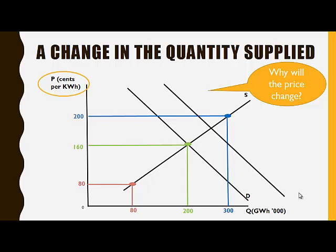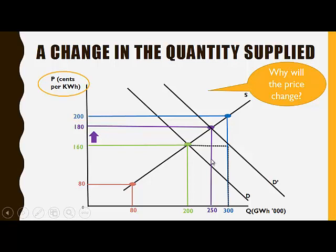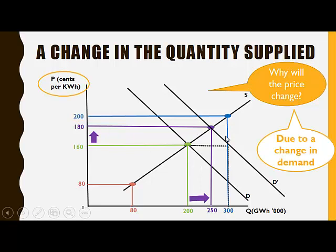As you can see, demand has increased here. At the current equilibrium price of 160, the quantity demanded will now be 300, while the quantity supplied remains at 160. Therefore, there is now excess demand in this market. This will put upward pressure on the price level. The price is going to increase to the new equilibrium level of 180 cents per kilowatt hour, and a new equilibrium quantity of 250 will be achieved. The equilibrium quantity has increased and the price has increased due to the increase in demand.